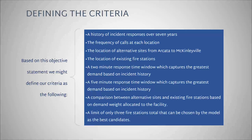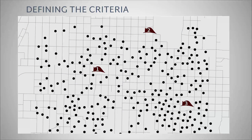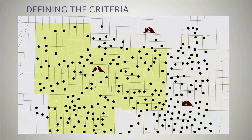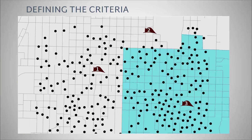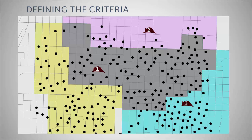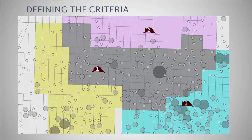A limit of only three fire stations total can be chosen by the model as the best candidates. The demand points for this model would be the history of incident responses. The facilities would be the existing and alternative fire stations. The allocation cost factors would include the volume of incident responses and the distance from the facilities. The impedance cutoff would be an area defined first by a two-minute response time window, then by a five-minute response window. The three final candidates would be chosen based on the total allocated demand weight.